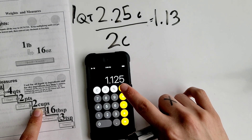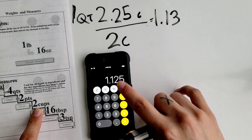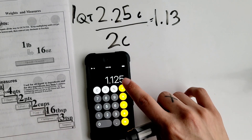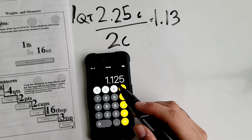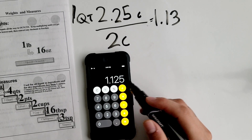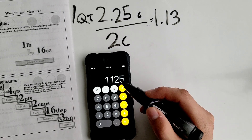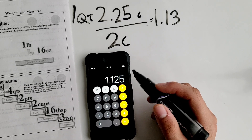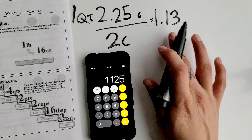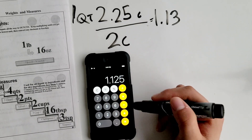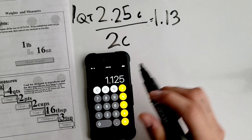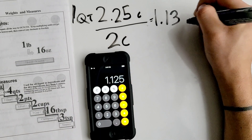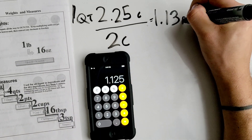We have to round to the hundredths place. Since this third decimal digit is 5 or above, we round up. If it were 4 or below, we'd leave it. So 1.125 rounds up to 1.13 pints.